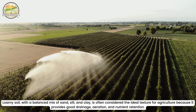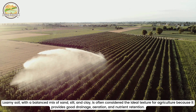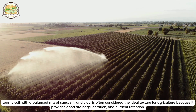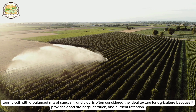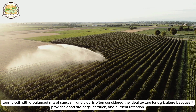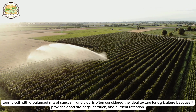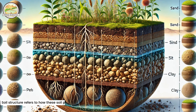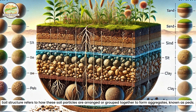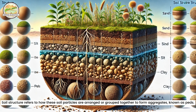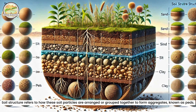Loamy soil, with a balanced mix of sand, silt and clay, is often considered the ideal texture for agriculture because it provides good drainage, aeration and nutrient retention. Soil structure refers to how these soil particles are arranged or grouped together to form aggregates,